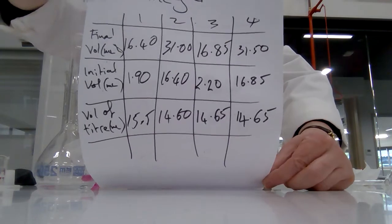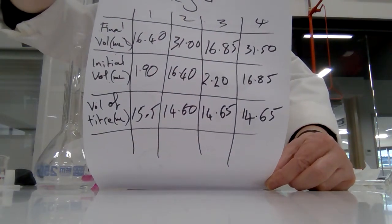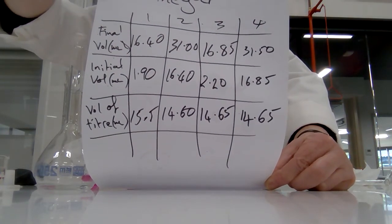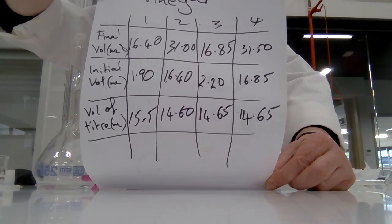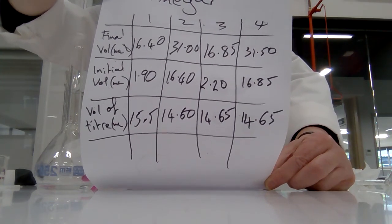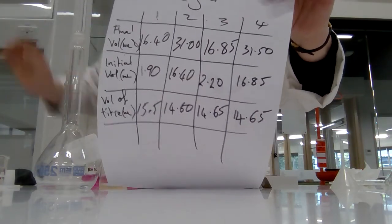There's my three sets of results. As you can see, I've got three concordant titers: 14.60, 14.65, and 14.65. That is a triumph. Thank you.